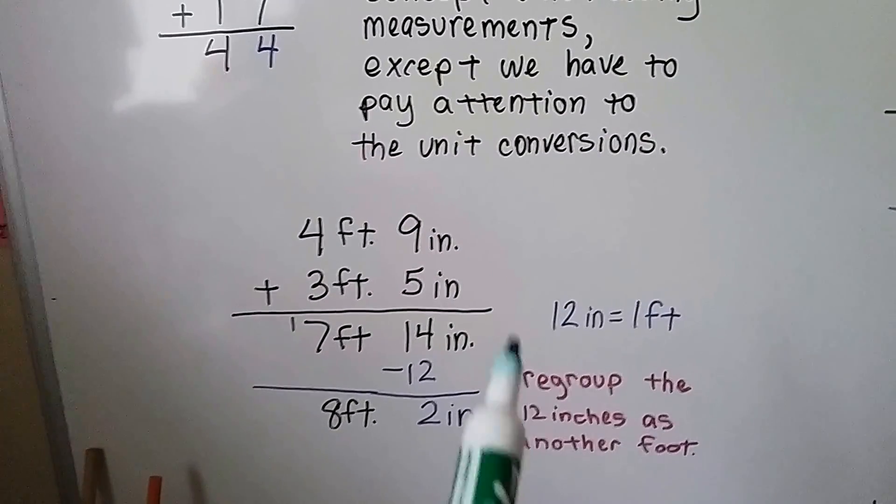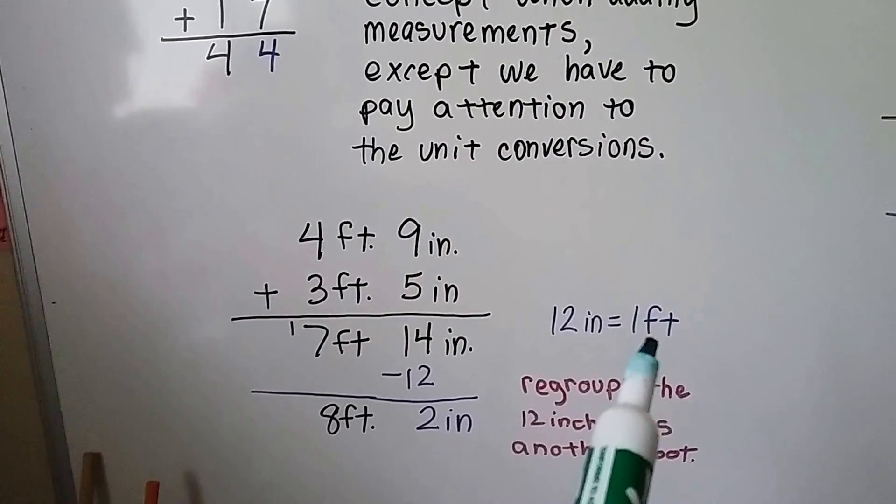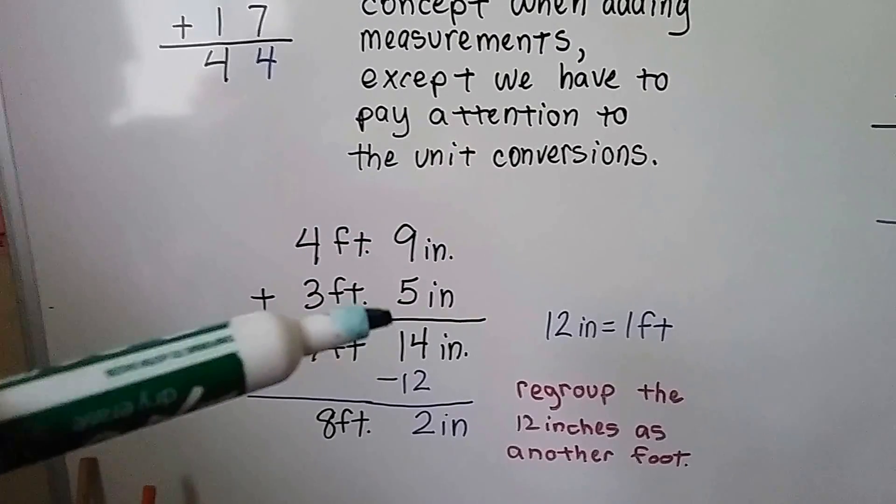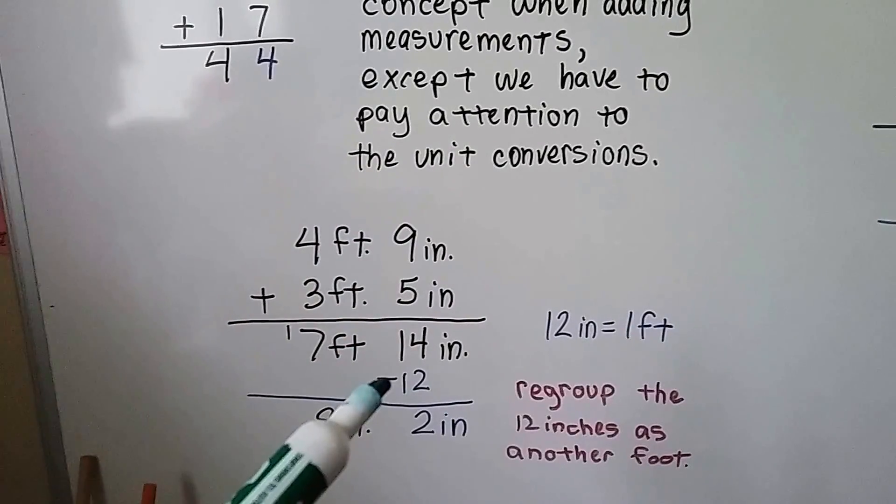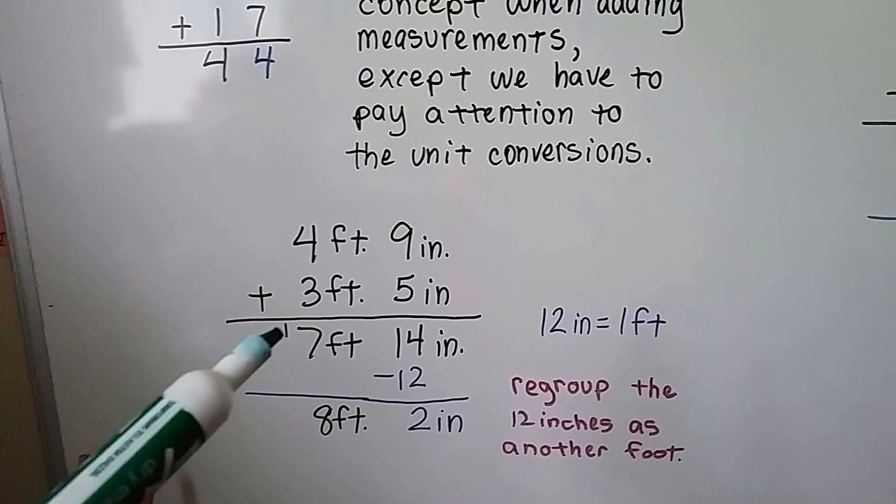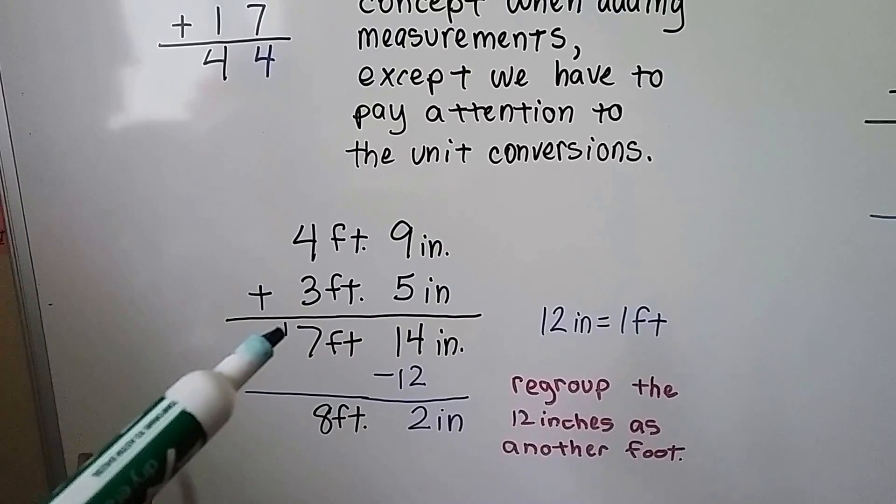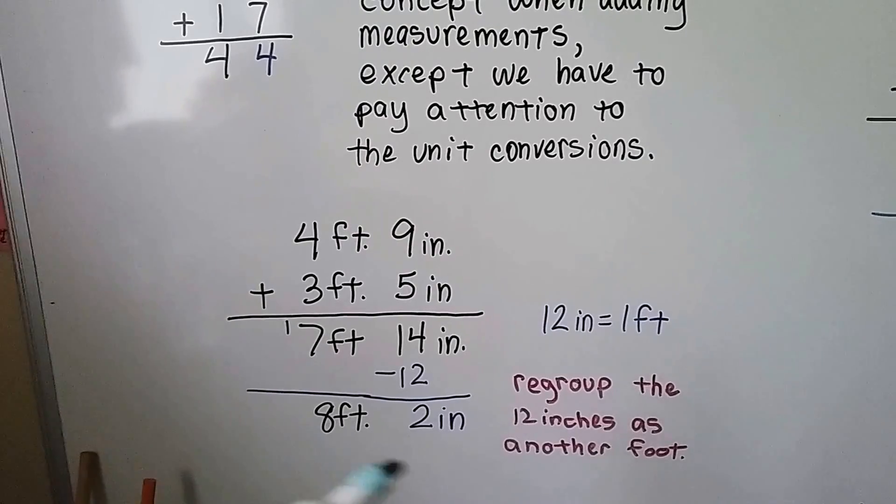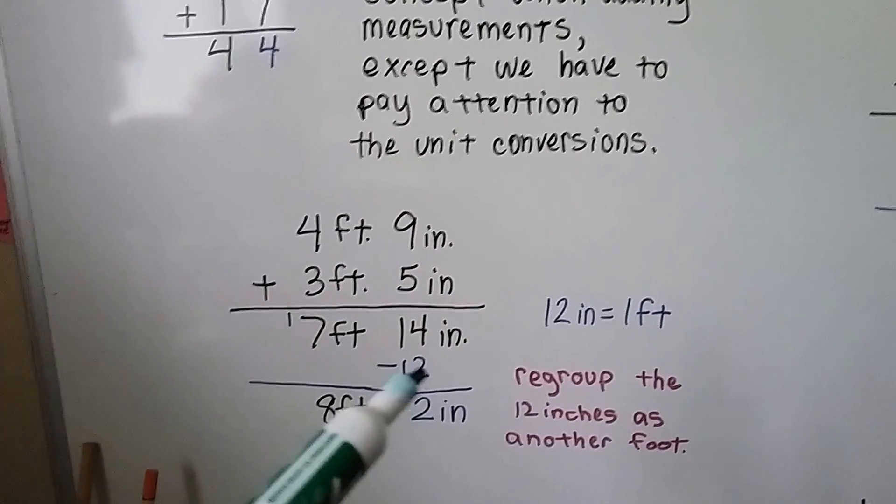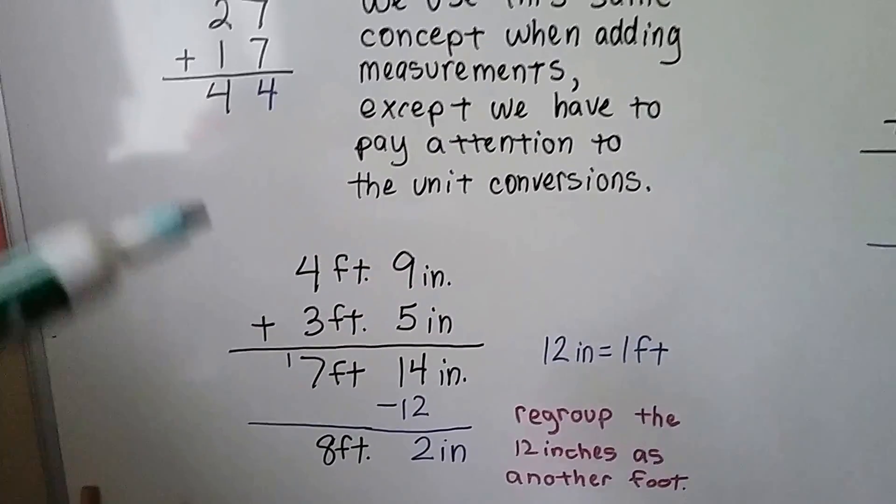9 and 5 is 14 inches. We can pull a foot out of this 14 inches—we take away 12 of them and give that foot to the 7. That'll give us 8 feet and 2 inches. We just regroup this 12 over to the feet, just like we would regroup this 10 to the tens column.